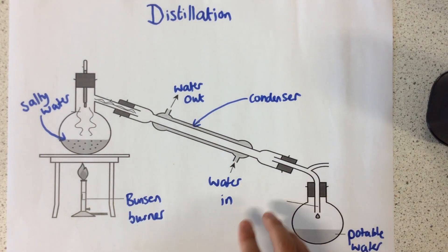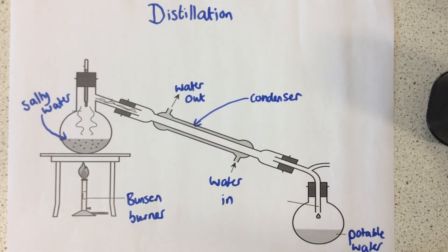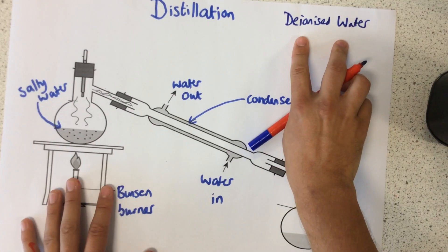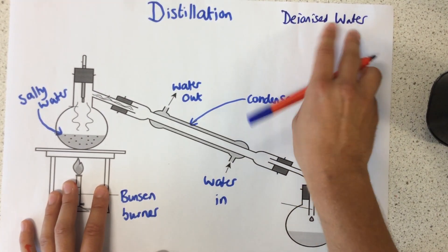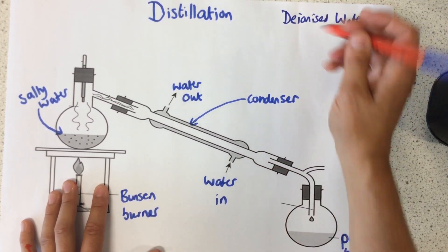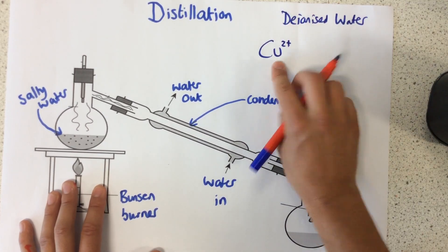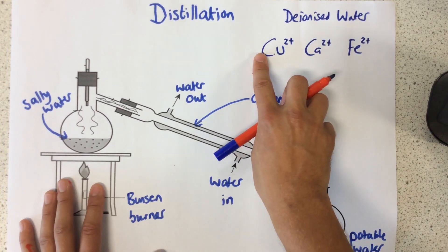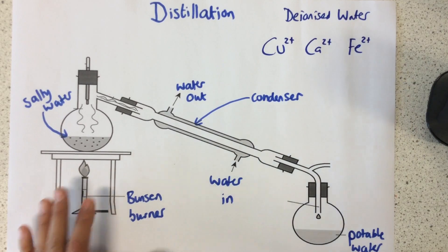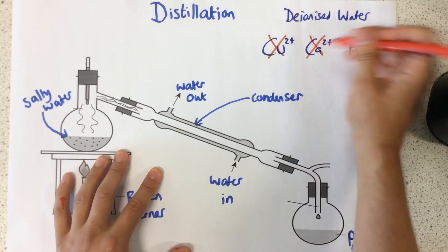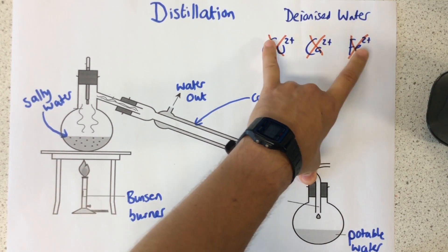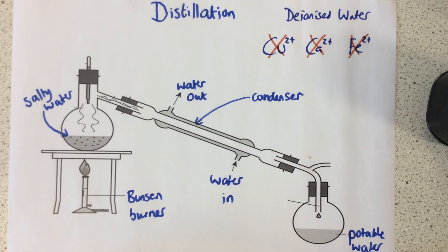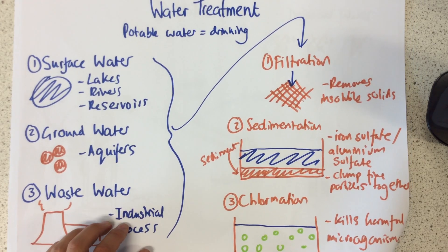If you want to learn more about distillation, please watch the video titled 'Distillation'. The final thing we're going to talk about is deionised water. In lots of chemical experiments in laboratories, we need water to use. However, in normal potable water we have different mineral ions such as copper, calcium, and iron. Deionised water is really important because it removes all of these different ions — if we have them in a laboratory they could cause unwanted reactions. So it's really important to remove them so that when we have chemical reactions in the lab, we don't have any unwanted reactions. And that is the basics of water treatment. Thanks for listening.